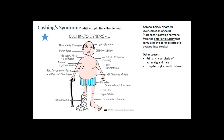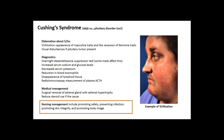Cushing's feels like déjà vu — it's a pituitary disorder, but it can also be a problem with the adrenal gland itself, or caused by long-term overuse of steroids. Review those signs and symptoms again. Additional symptoms include virilization — the appearance of masculine traits and recession of feminine traits. Diagnostics include an overnight dexamethasone suppression test. Surgical removal of the adrenal gland is the treatment. Nursing care involves promoting safety, preventing infection, promoting skin integrity due to the thinning skin, and supporting body image.